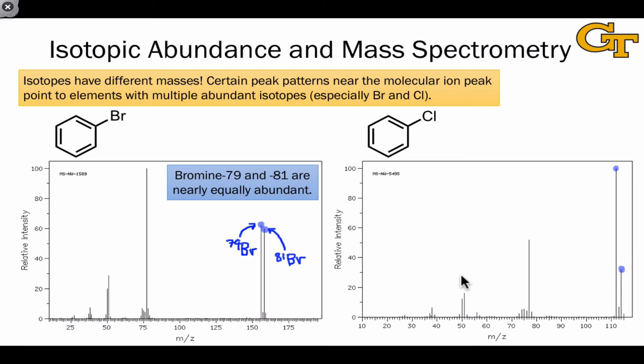This pattern comes from the fact that chlorine-35 is about three times as abundant as chlorine-37. That's why the height of the peak at lower mass, which is due to molecules containing the chlorine-35 isotope, is about three times as high as the peak at higher mass, which is due to molecules containing the chlorine-37 isotope.